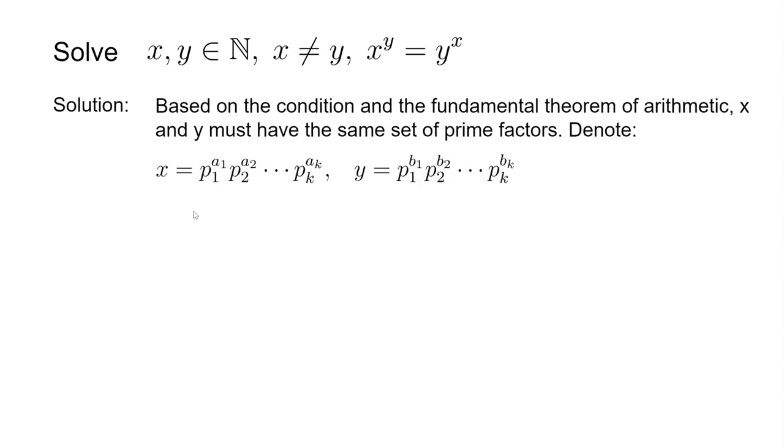We can denote the set of prime factors as p1, p2, all the way to pk. So x and y can be expressed in these terms. Notice that ai doesn't equal bi, and ai and bi are both natural numbers.